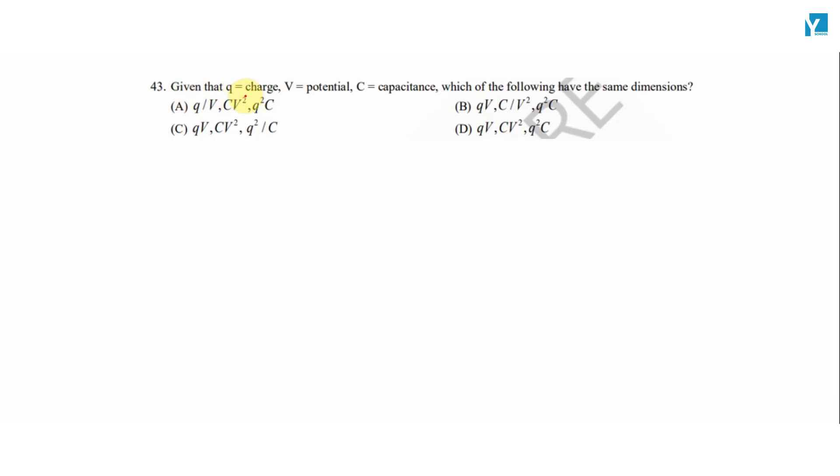Given that Q is equal to charge, V is equal to potential and C is equal to capacitance, which of the following quantities have the same dimensions? Humari paas given hai Q kya hai charge, and V ko pata hai, V ko denote kiya hai as potential, and C is described as the capacitance. Humari paas ye hai ki in 4 options mein se kis option mein saari saari quantities jo hai same dimension.